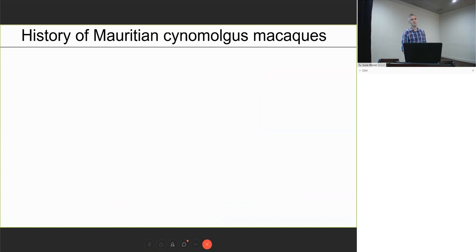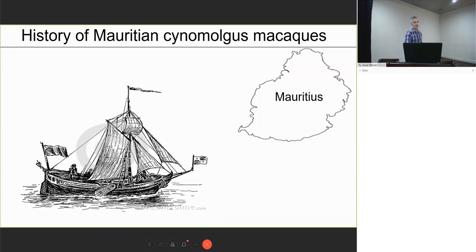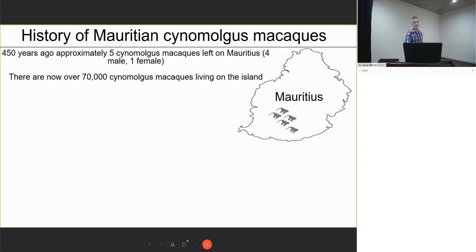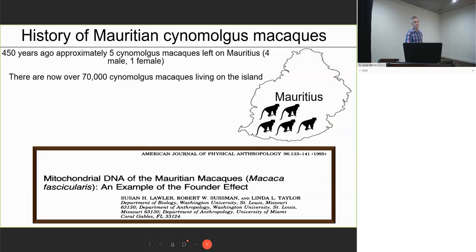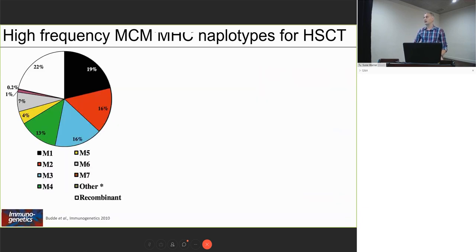To this end, we focused on a population of animals called Mauritian cynomolgus macaques. This is an insular population that descended from a bottleneck event about 500 years ago. We know through mitochondrial DNA analysis it was as few as four males and one female on this island. They then had a wonderful existence for about 500 years. There's now 70,000 of these animals. And because they went through that population bottleneck, as shown by Dave O'Connor about 10 years ago now, he showed really well that there's only seven MHC haplotypes in this entire population. And so you can basically type 20 animals and easily find fully MHC-matched donor-recipient pairs.